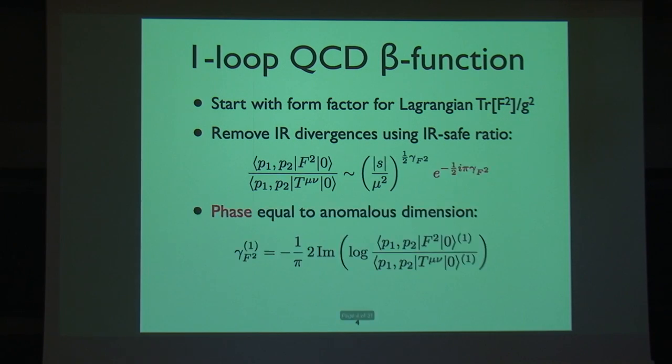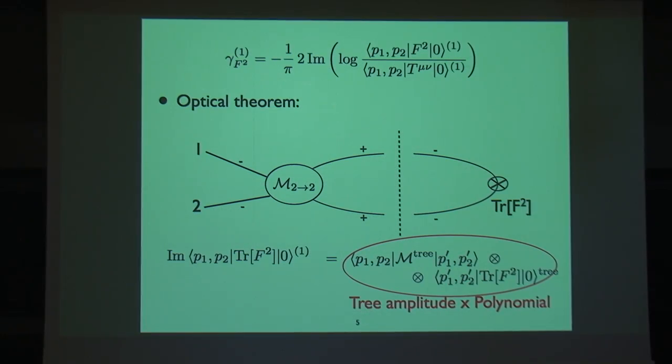The main idea is that this thing comes with a phase, the phase of the form factor is telling us about the anomalous dimension. But because it's a phase, there's an optical theorem which allows us to compute it using unitarity. If you take this form factor for trace of F square, you want to calculate its imaginary part at one loop, you make a cut where you have a three-gluon amplitude, two-to-two scattering amplitude on one side of the cut. You integrate this three-amplitude over phase space and this form factor, and this form factor is just some polynomial function.